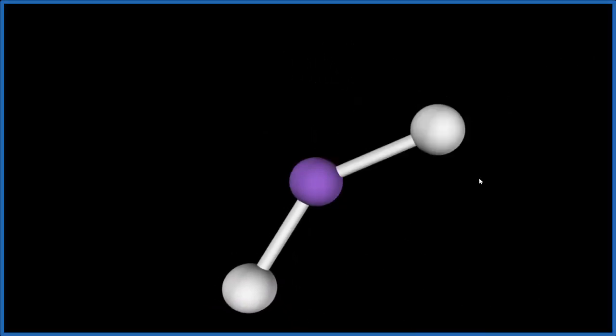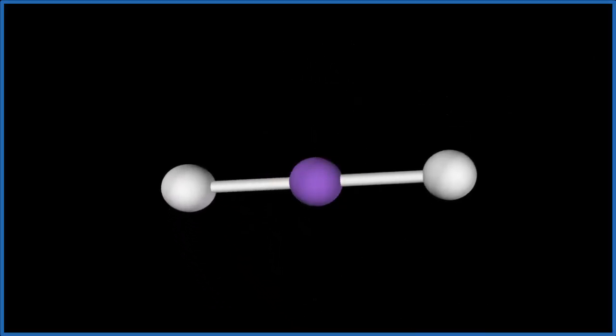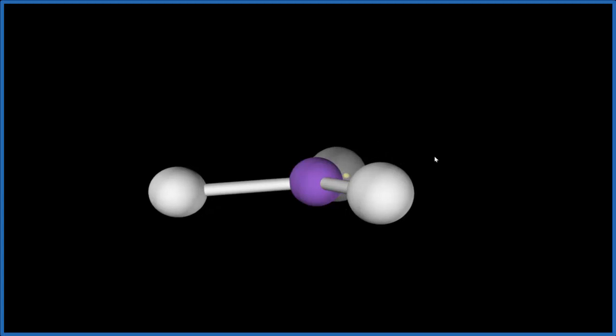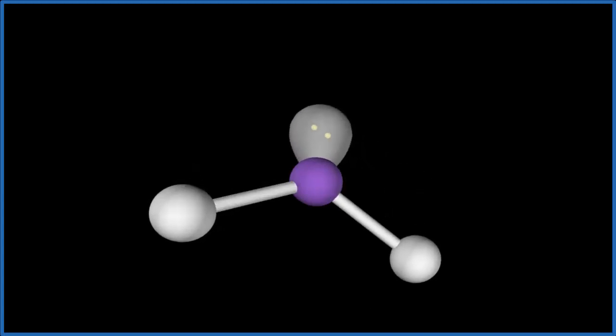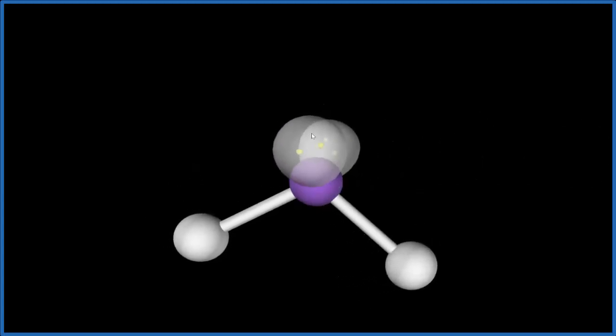We have two atoms, those are the chlorines. They spread out as far away as they can from each other, and then we have the two lone pairs. One pushes everything down, and then we have one more. So we end up with this bent molecular geometry.